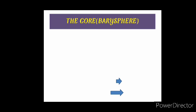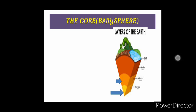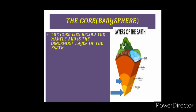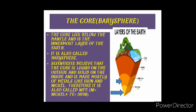The core lies below the mantle and is the innermost layer of the earth. It is also called barysphere. Scientists believe that the core is liquid on the outer side and solid on the inside and is mostly made of metals like iron and nickel.